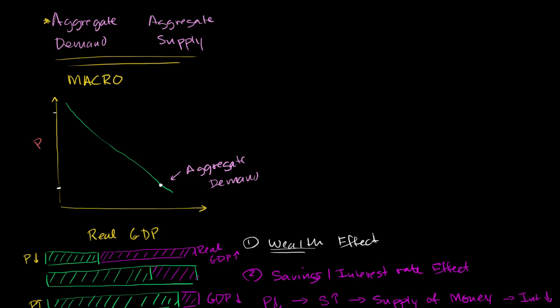In the last video, we started thinking a little bit about the aggregate demand curve and why it might be downward sloping. We reviewed some of the possible justifications for a downward sloping aggregate demand curve, the wealth effect.